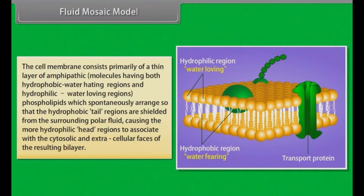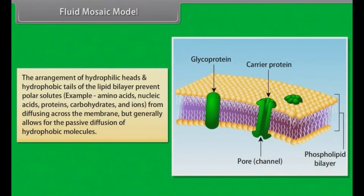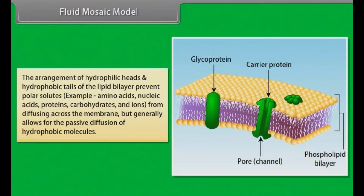The cell membrane consists primarily of a thin layer of amphipathic molecules having both hydrophobic water-hating regions and hydrophilic water-loving regions. Phospholipids spontaneously arrange so that the hydrophobic tail regions are shielded from the surrounding polar fluid, causing the more hydrophilic head regions to associate with the cytosolic and extracellular phases of the resulting bilayer. This arrangement prevents polar solutes — for example, amino acids, nucleic acids, proteins, carbohydrates, and ions — from diffusing across the membrane, but generally allows passive diffusion of hydrophobic molecules.